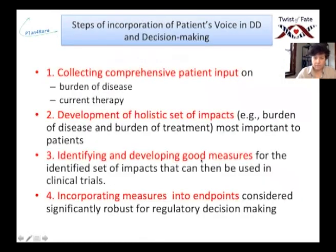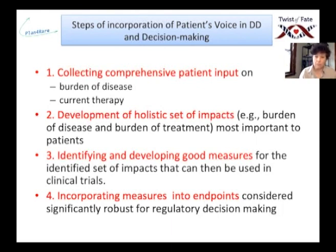The big plan over the next few years with Andrea and A Twist of Fate for ATS patients is: first, to collect comprehensive patient input — as much data as possible from each of you on the burden of the disease and current therapy. Then we need to develop a holistic set of impacts that are most important to patients. From that, we will identify and develop good measures for that set of impacts to be used in clinical trials. We will incorporate these measures into endpoints to determine when a drug can be declared effective.